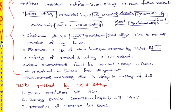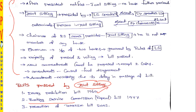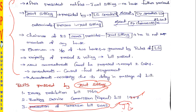In India, the joint sitting has been called upon only three times: the Dowry Prohibition Act 1961, the Banking Services Commission Bill 1977, and the Prevention of Terrorism Bill 2002. You can easily remember these three instances.